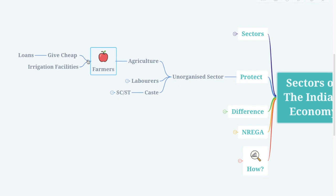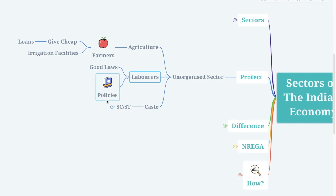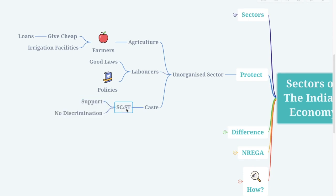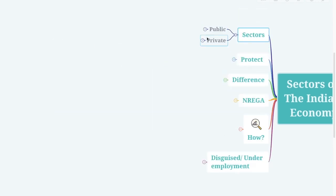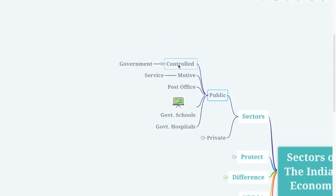To protect people working in the unorganized sector: in the agricultural field, farmers should be given cheap loans and irrigation facilities. There should be good laws and policies for daily laborers. The government should also support SC and ST categories so there is no discrimination against these people.